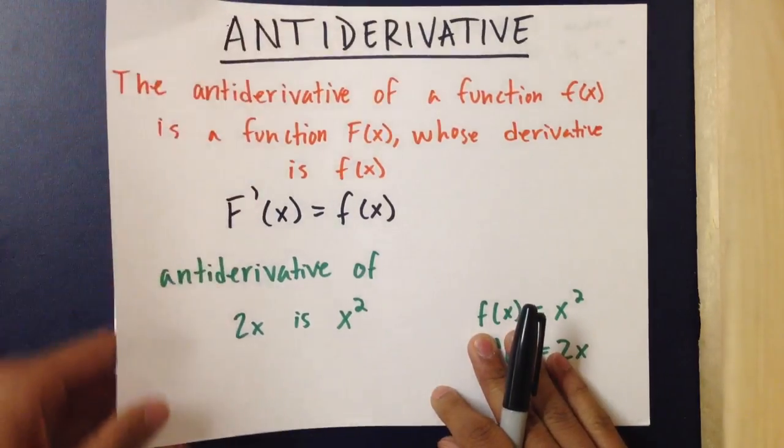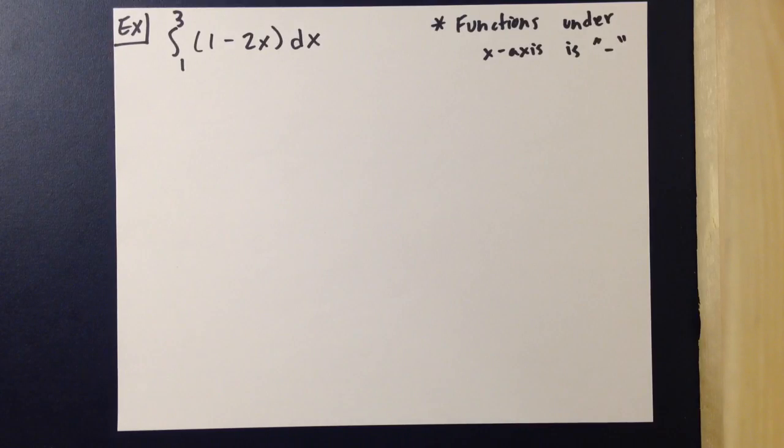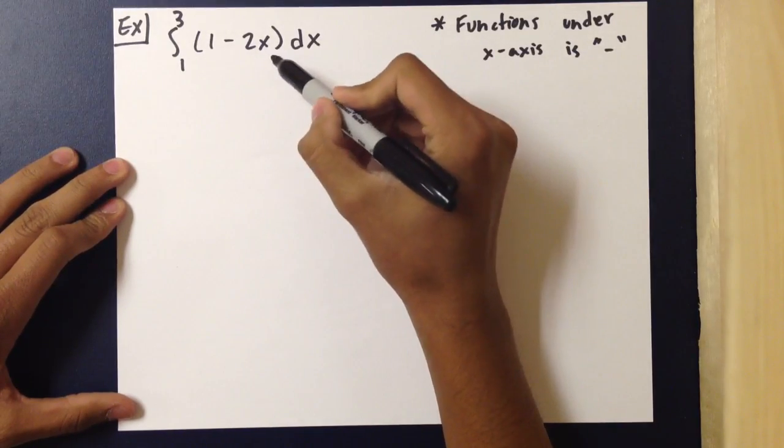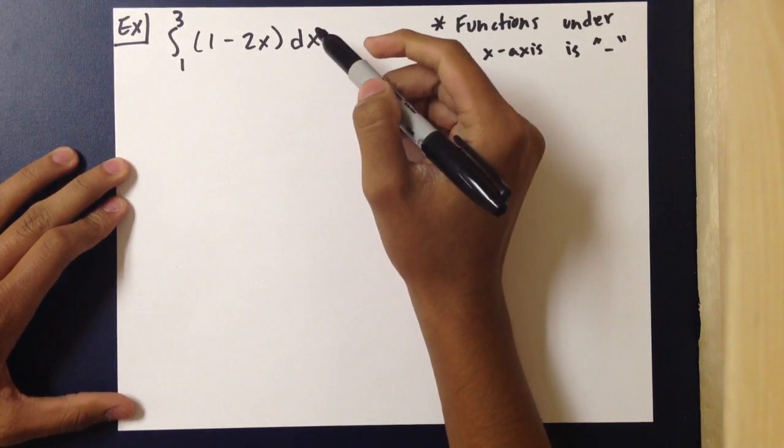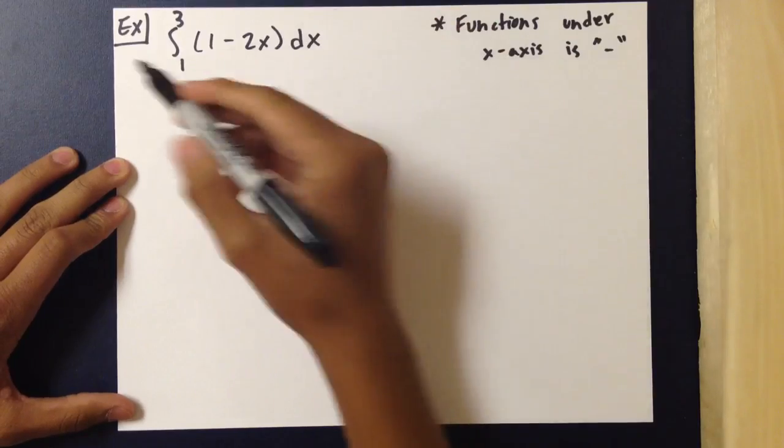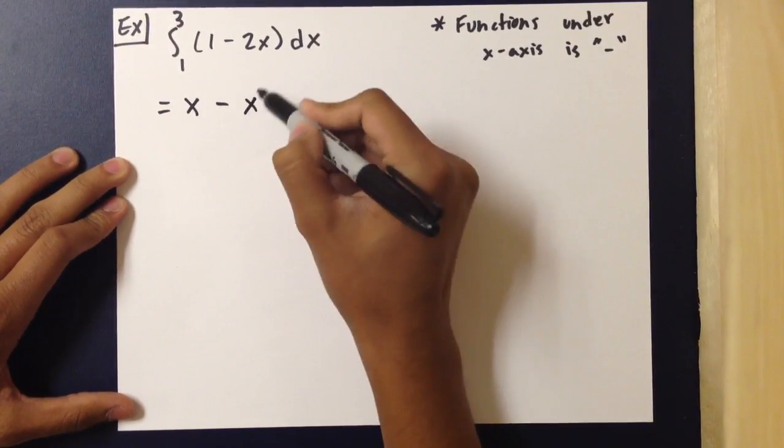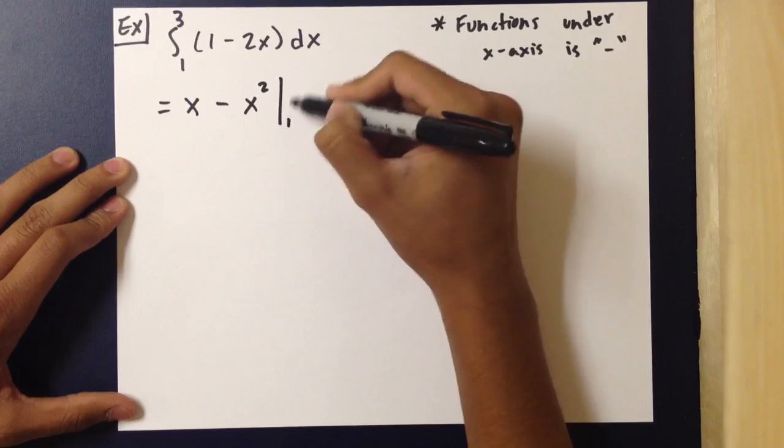Now we'll work through an example of solving a definite integral using the second fundamental theorem of calculus. The integral from 1 to 3 of (1 - 2x) dx equals [x - x²] evaluated from 1 to 3.